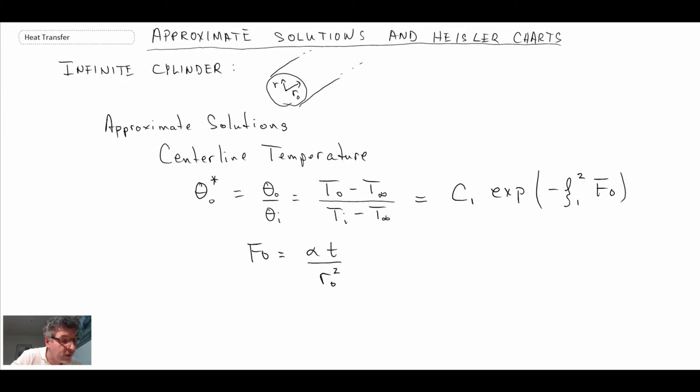And the Biot number: H times the characteristic length scale, which is the outer radius for the cylinder, divided by the thermal conductivity of the cylinder. Now C₁ and zeta, where are you going to get those from? Well, you get them from a table, and they will be as a function of the Biot number, and those are listed in a table.